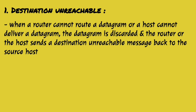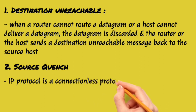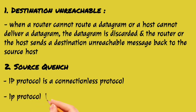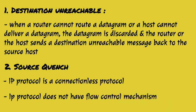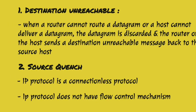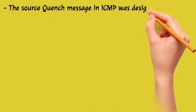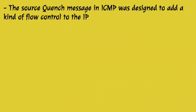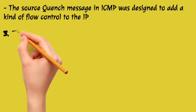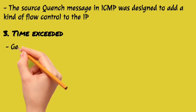Source quench message: the IP protocol is a connectionless protocol, so there is no flow control mechanism between source and destination. When messages are going to a destination and the destination is not able to handle them because there is overflow, it discards all these messages. When this situation occurs, a source quench message is sent back to the source so the source knows its messages are not being received.